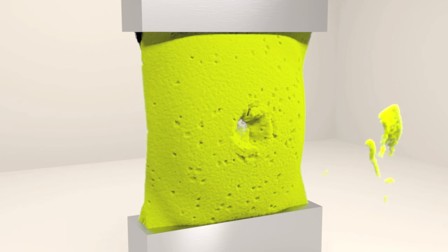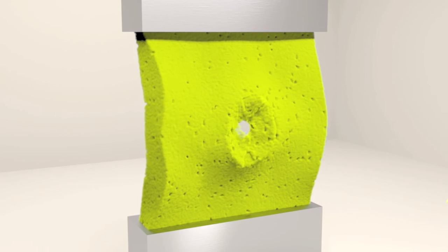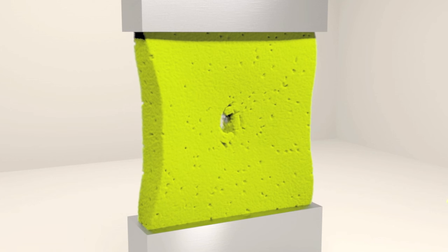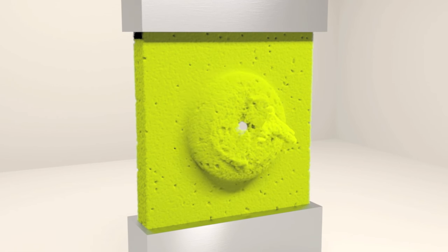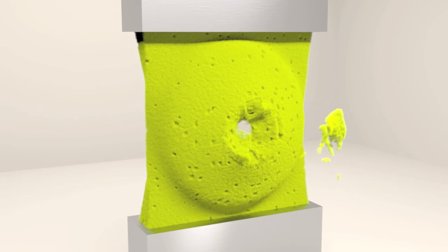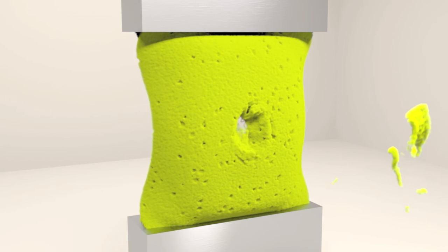We shoot a sponge with a kinematic bullet. Here we show it in slow motion. Notice the detailed material response after impact.